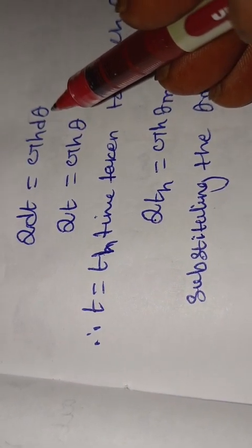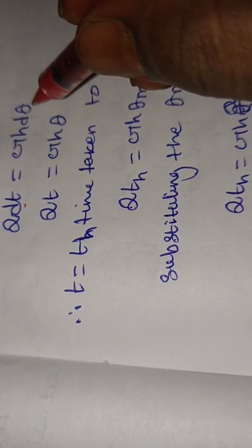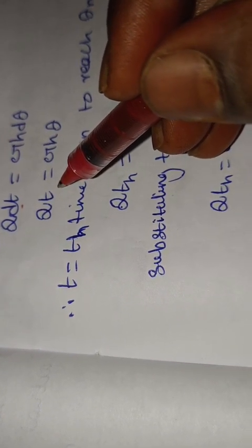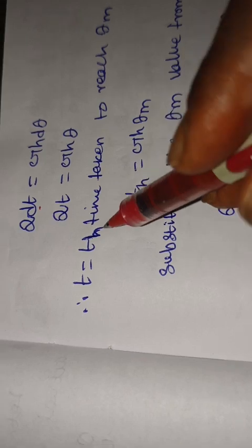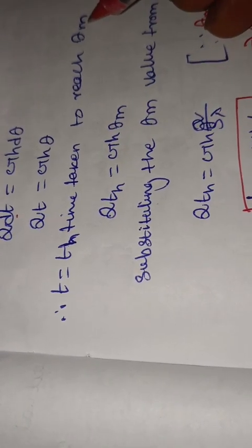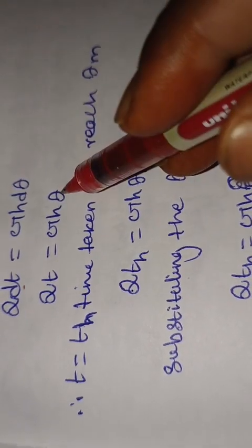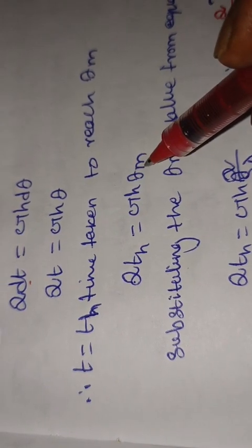Rearranging: Q·dt = G·H·dθ. Integrating over total time T and total temperature rise theta gives: Q·T = G·H·θ. Here T is the time taken for the heating process and theta is the temperature rise. We set T = T_H, the time taken to reach the maximum operating temperature theta_m.